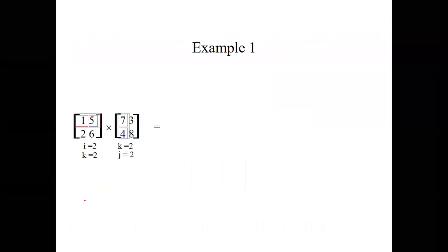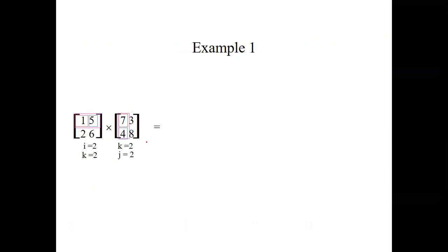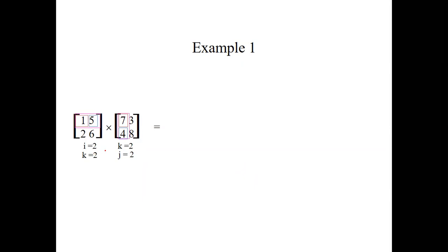Here we have two 2×2 matrices, meaning each matrix has two rows and two columns. First we check if they can be multiplied. For the first matrix i=2 and k=2; for the second matrix k=2 and j=2. Since k is the same, we can multiply these two matrices.